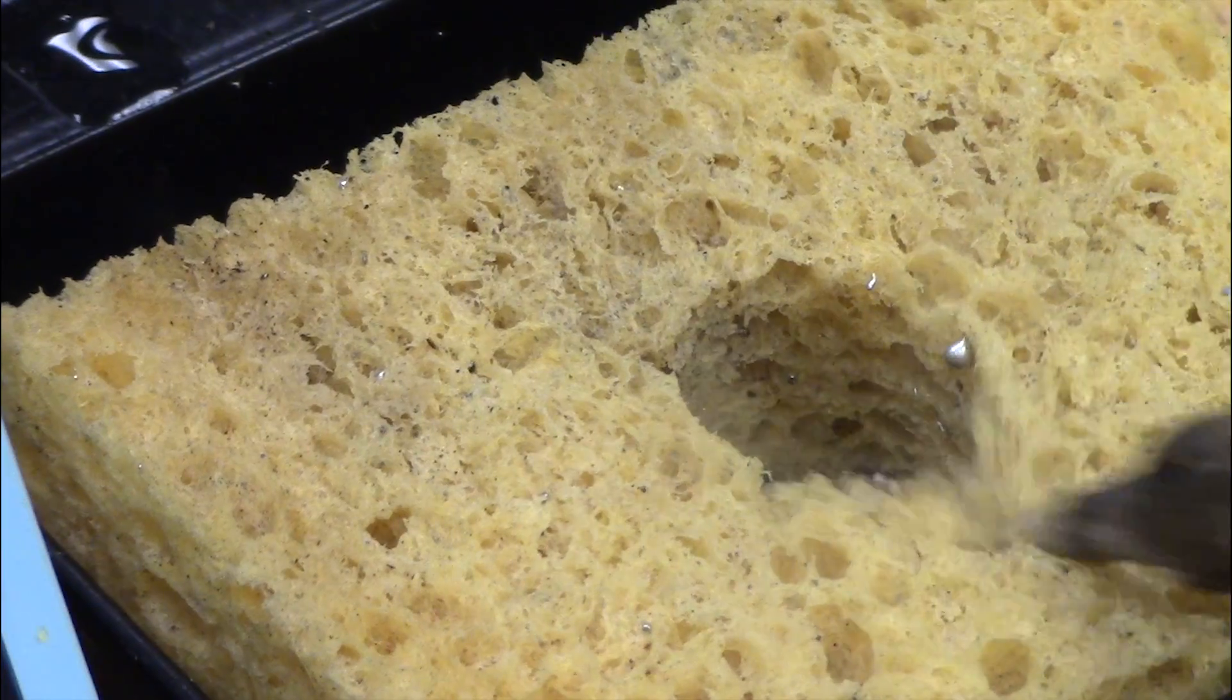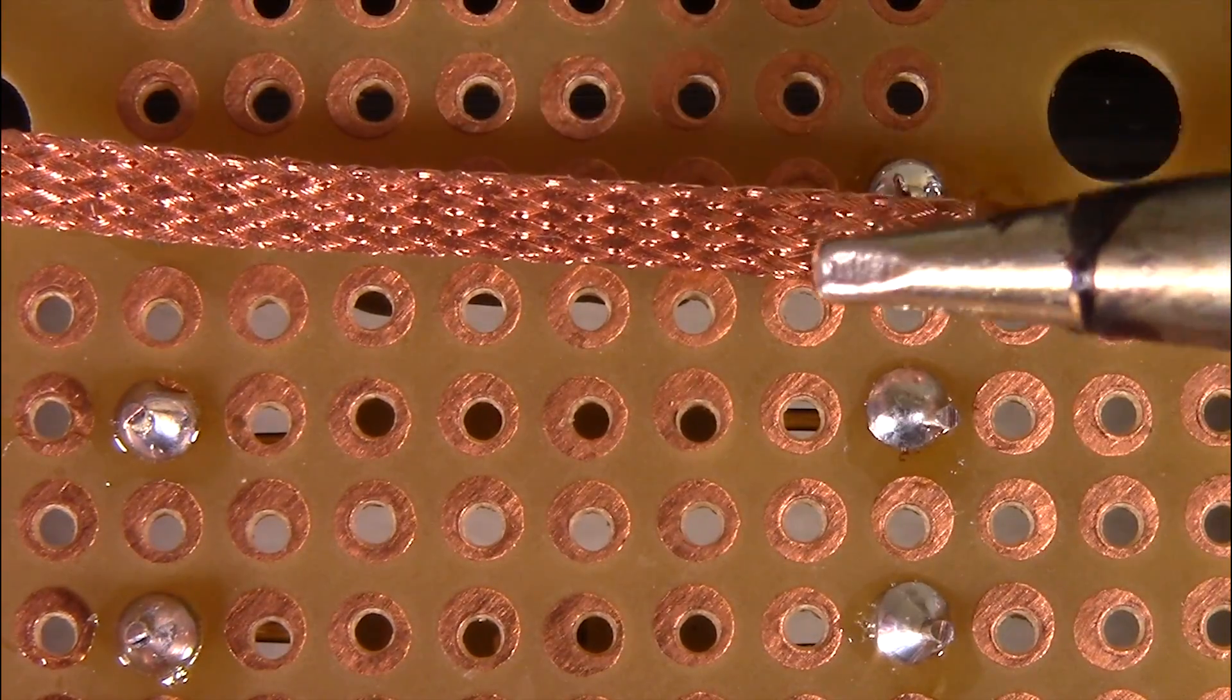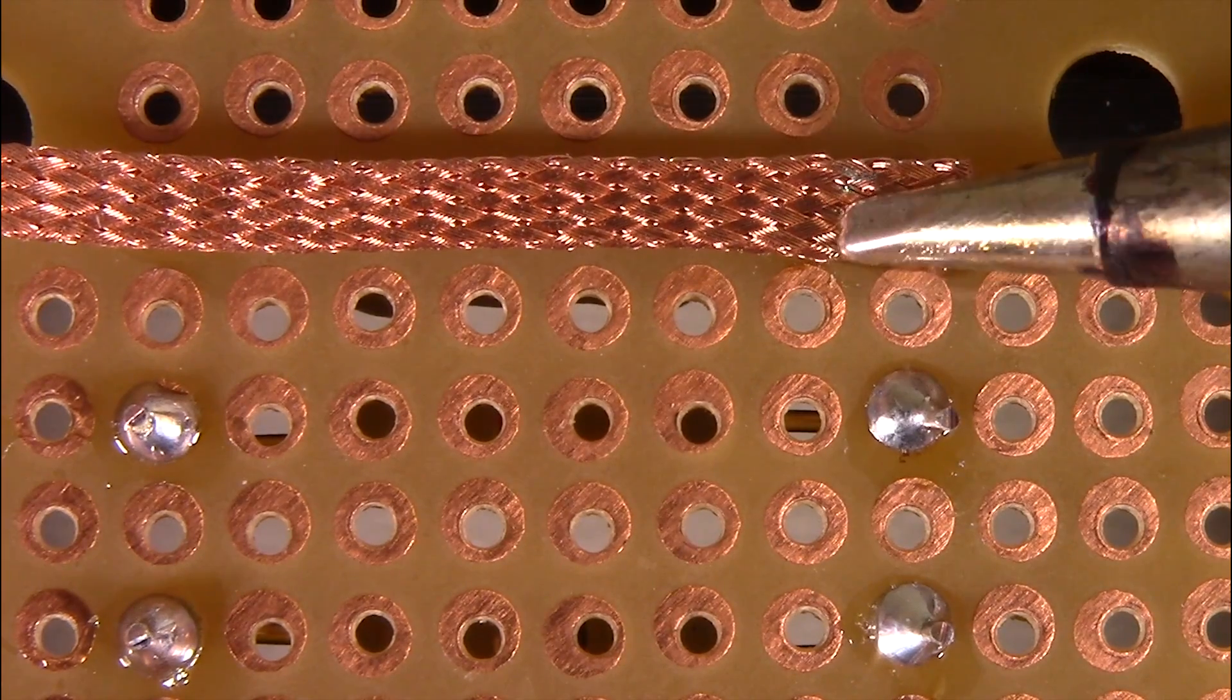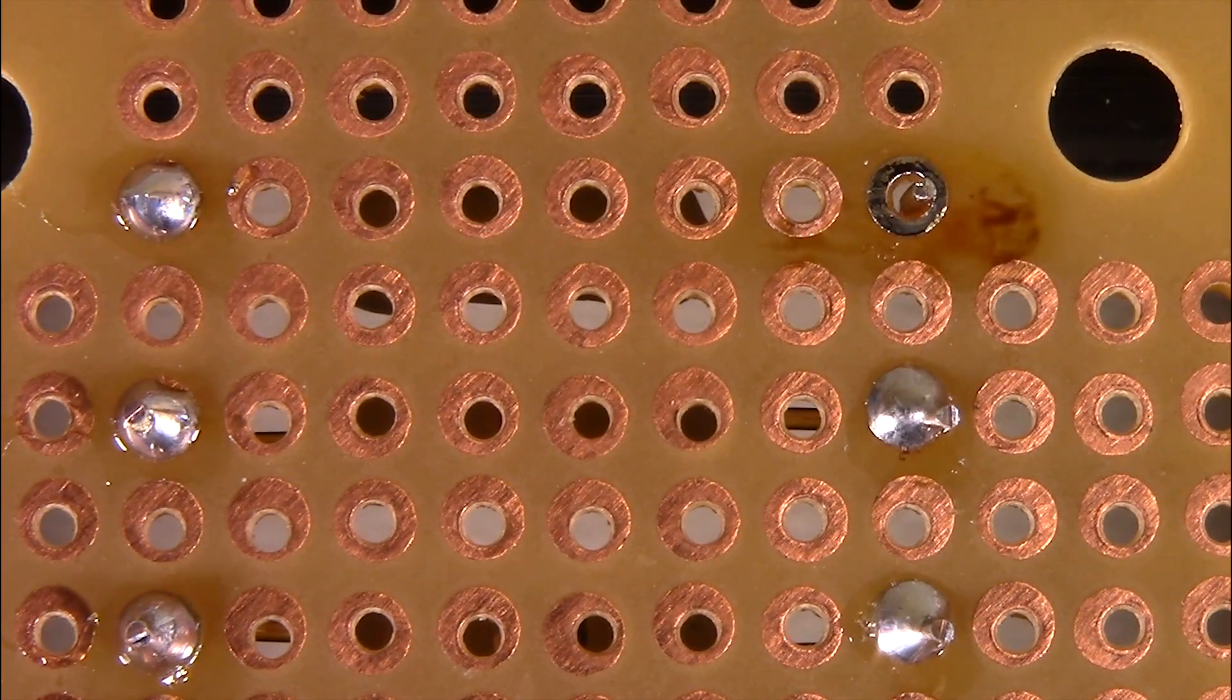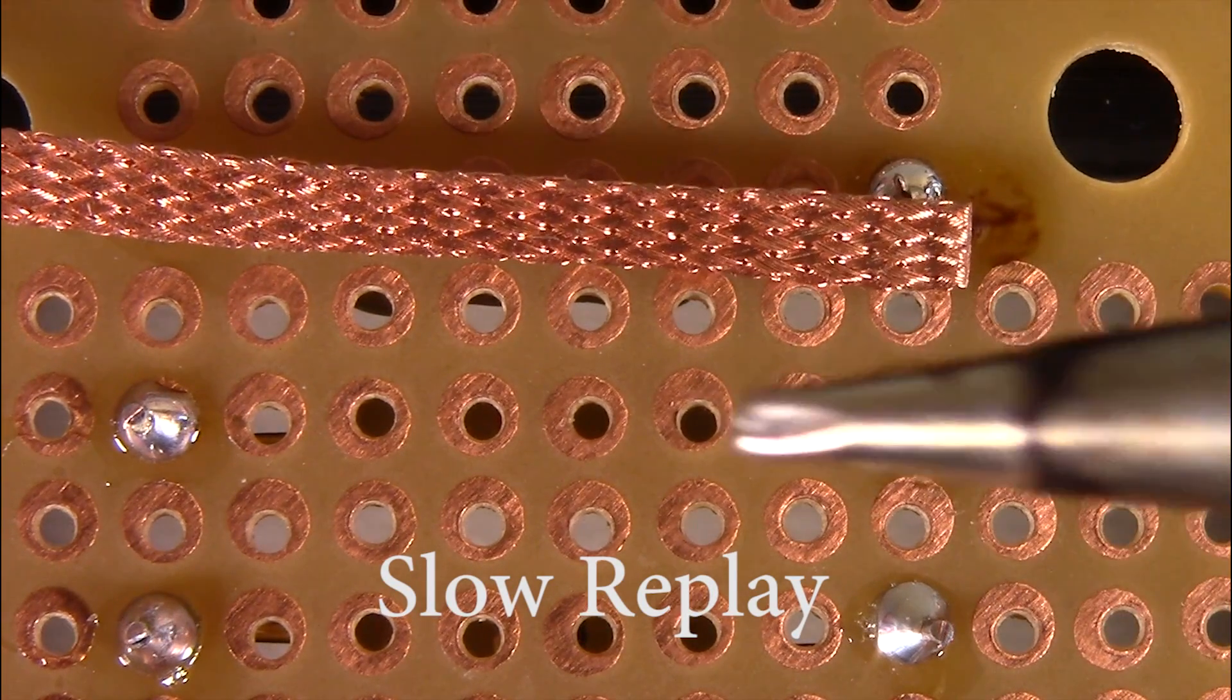Clean the soldering iron tip on the sponge and place the side of the soldering iron tip on top of the wick. This allows a large area of the wick to heat and absorb the solder quickly. It may take quite a few seconds to heat the solder wick. Be patient.